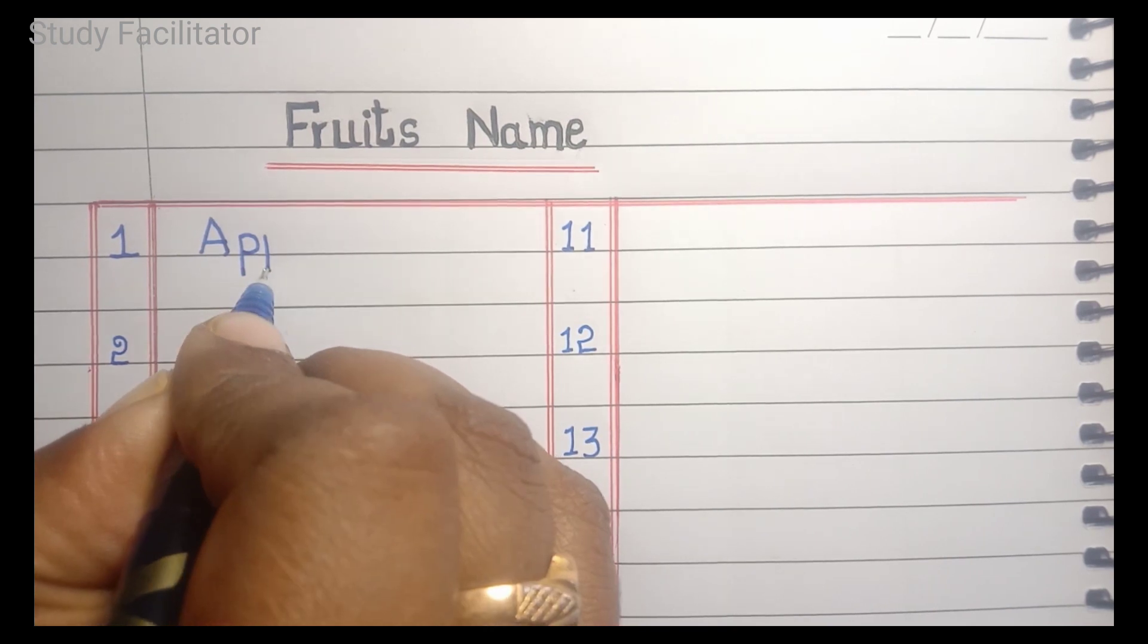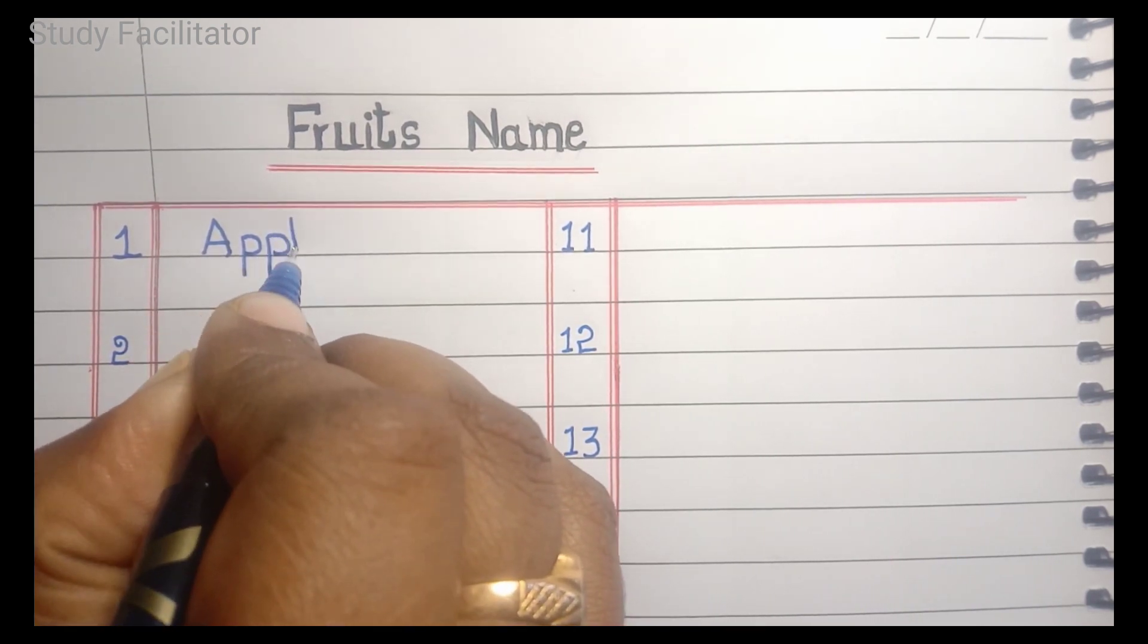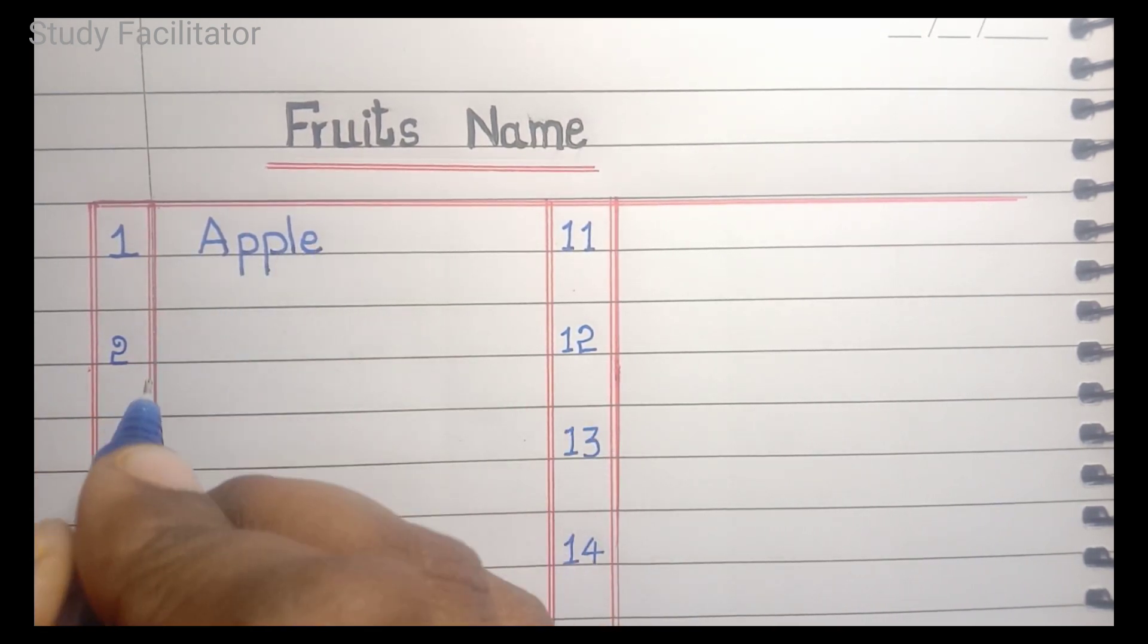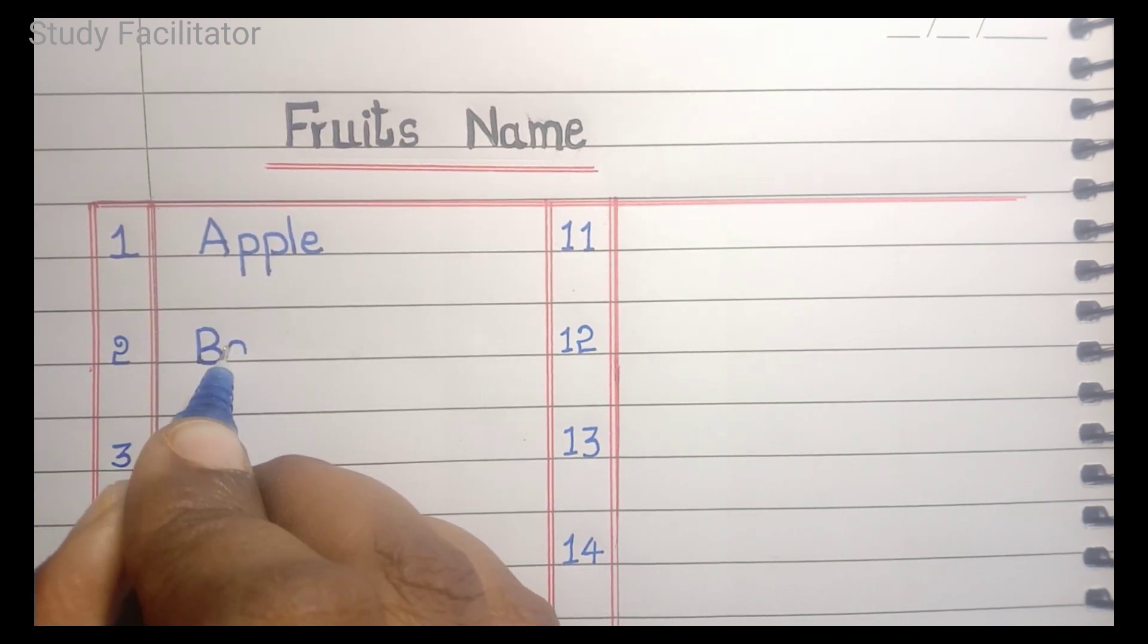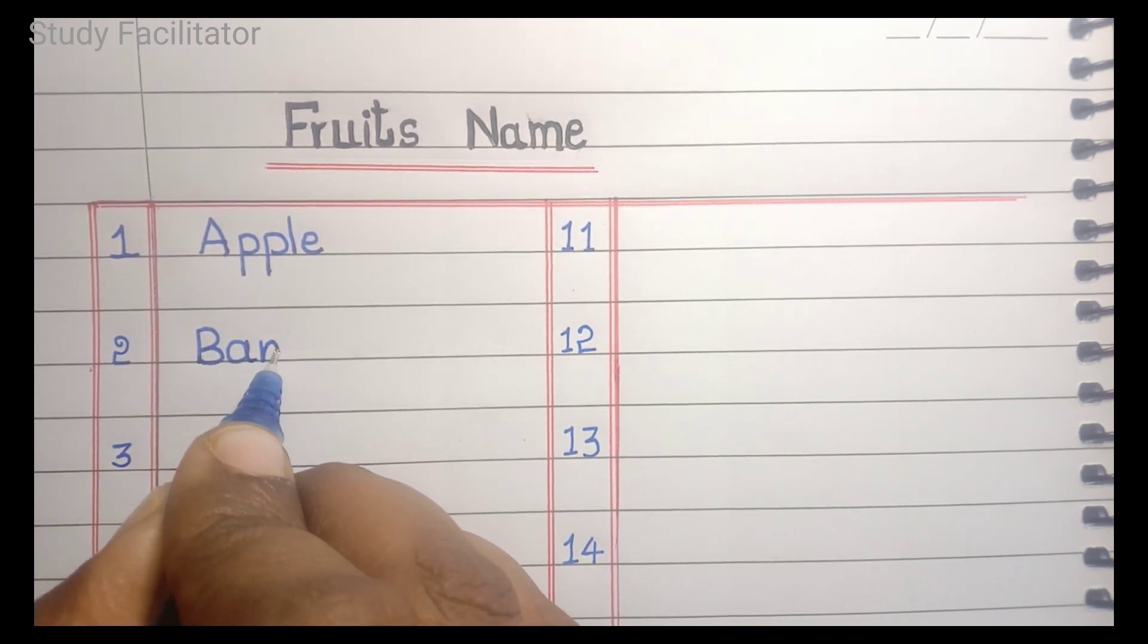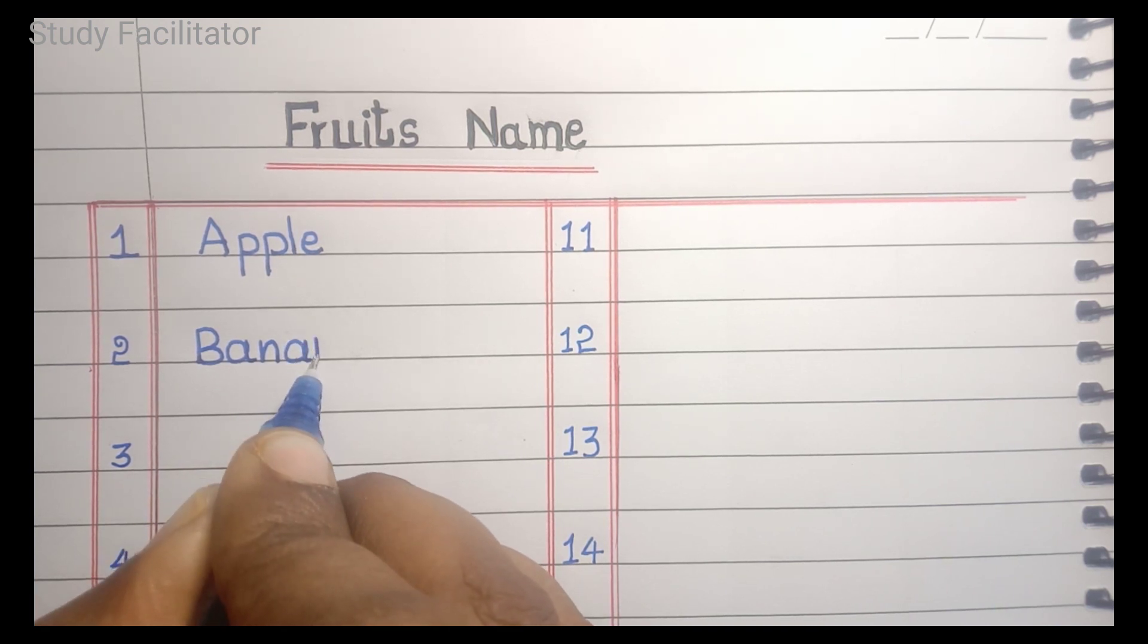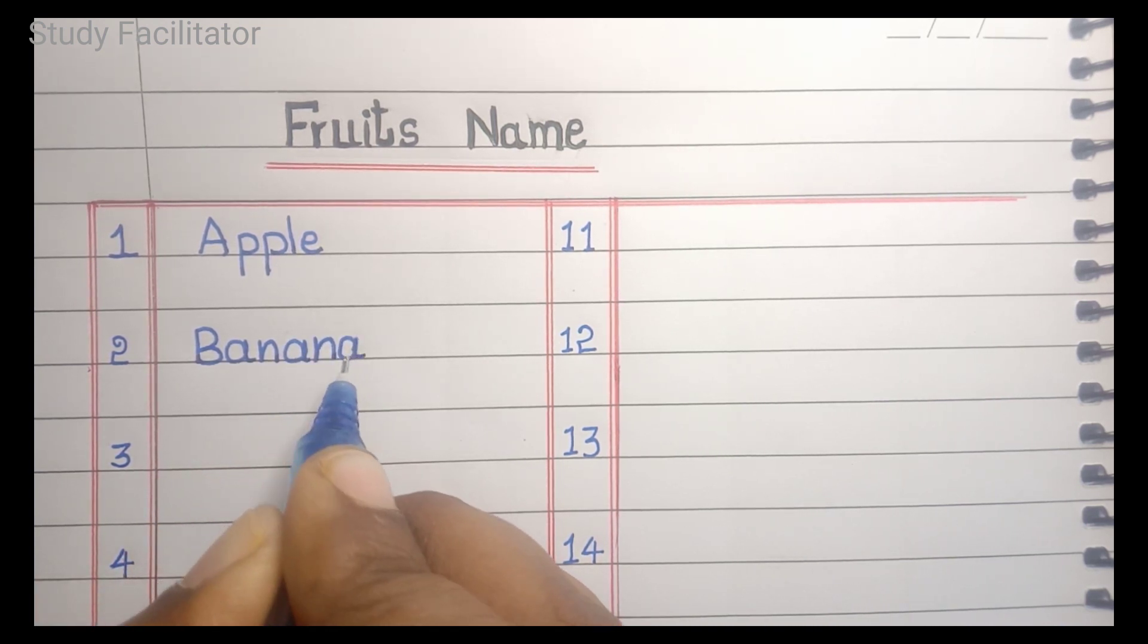Apple. A, P, P, L, E. Apple. Banana. B, A, N, A, N, A. Banana.